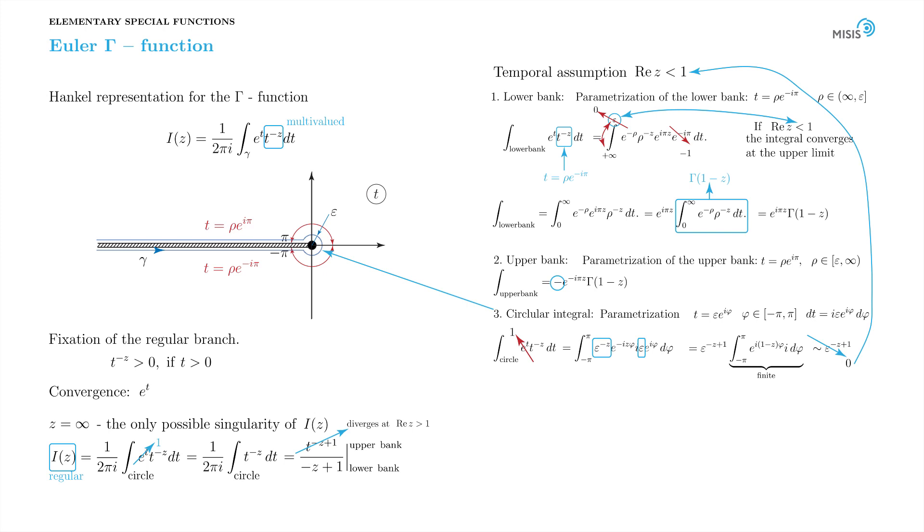So the integral along the contour is reduced to the integral along the upper bank and the lower bank. Factoring out gamma function, we see that expression in brackets is nothing but a sine function of pi z times 2i. Dividing by 2 pi i, we obtain the i function.